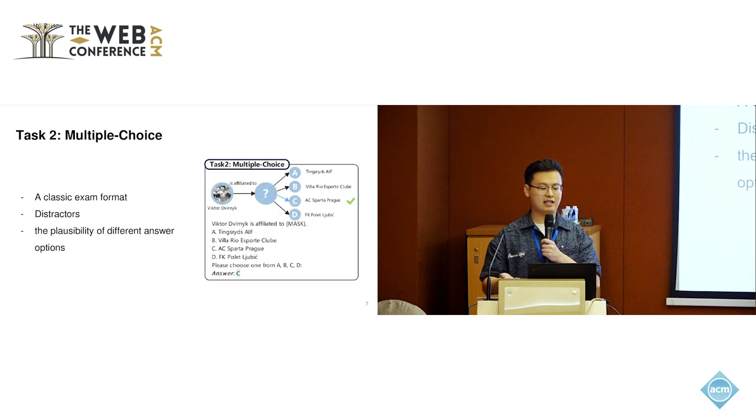Our second task is multiple choice. Multiple choice is a very classic exam format and is widely used in many question-answering benchmarks. Compared to task one, multiple choice additionally introduces other distractors that test if the model has the ability to evaluate the possibility of different answer options. In our setting, we introduce four options for each question: one correct answer and three distractors sampled using negative sampling methods.